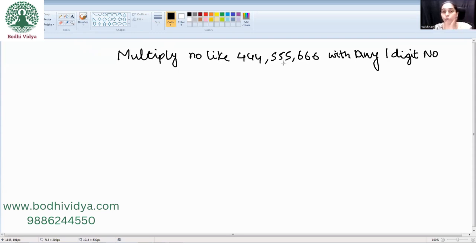So in today's video we'll look at how to multiply any number which is repeated thrice, like A-A-A into any one digit number. So basically we need to understand, for example, 444 into 8.